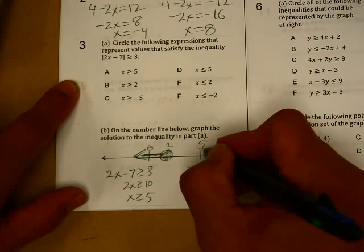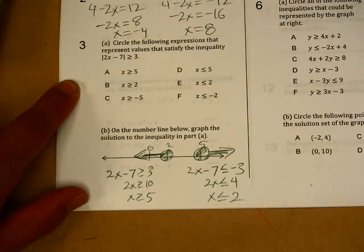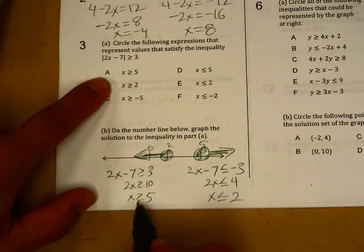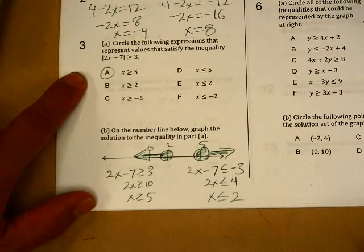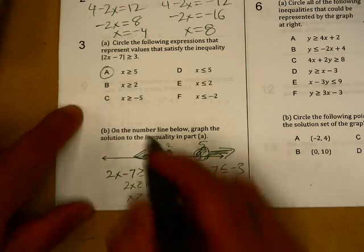And x is greater than or equal to five. Circle it in at five, and it would be going this way. So if x is greater than five, that satisfies this one right here. x is greater than two would be between here and here, so that doesn't work.